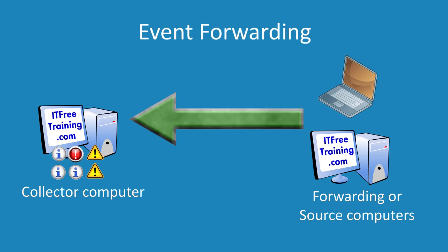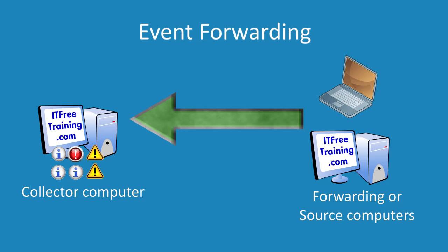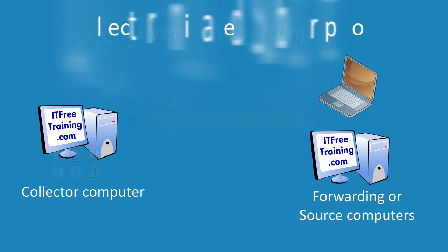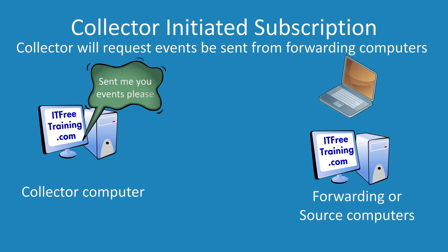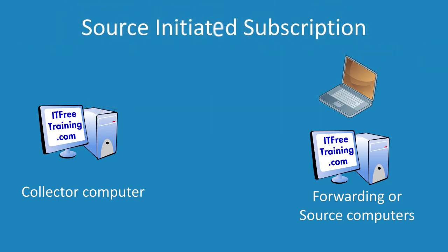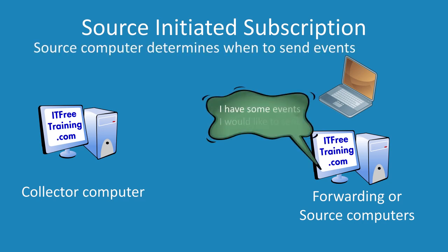Events can be transferred from the forwarding computer to the collector computer in one of two ways. In the first method, the collector will contact the source computer and ask it to transfer events. This is called collector initiated subscription. This works well with only a few clients but does not scale well. If you are managing a lot of computers you will want to use the second method called source initiated subscription. This is when the client or source computer transfers events to the collector as required. The collector does not query the client to see if any events need to be transferred.